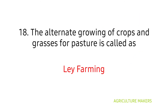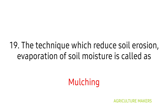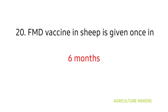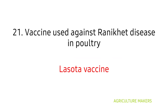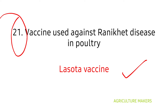The alternate growing of crops and grasses for pasture is called ley farming. The technique which reduces soil erosion and evaporation of soil moisture is called mulching. FMD (foot and mouth disease) vaccine in sheep is given once in 6 months. The vaccine used against Ranikhet disease in poultry is Lasota vaccine. You have seen a lot of questions from animal husbandry — you will get 5 to 6 questions from animal husbandry alone.